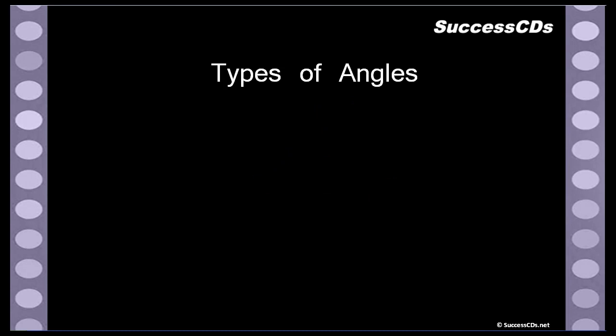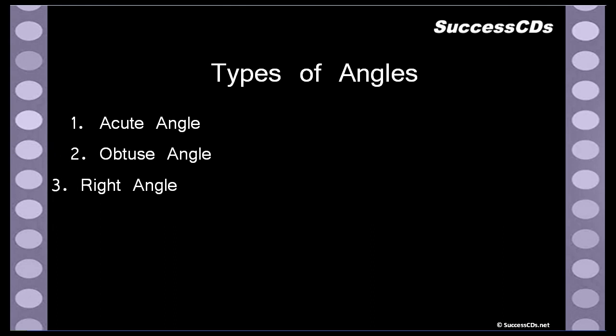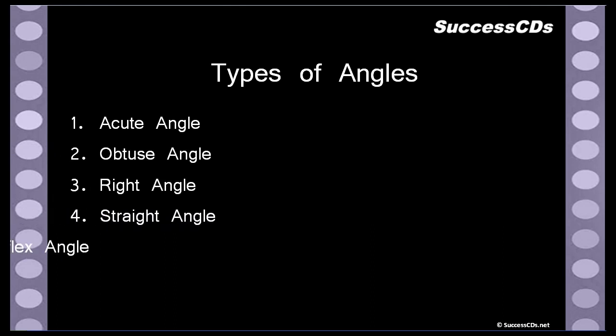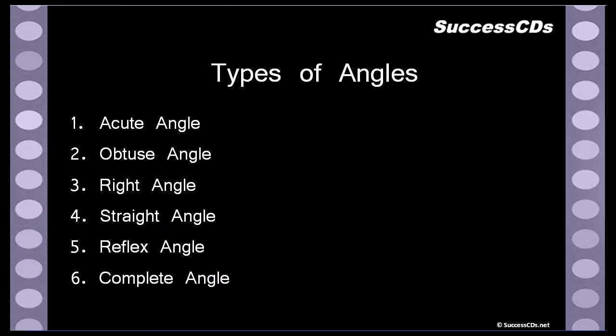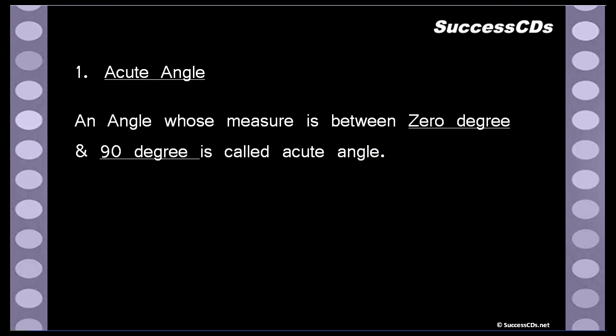Now we come to the types of angles. We have various varieties of angles: acute angles, obtuse angles, right angle, straight angle, reflex angles, complete angles. There are many types of angles. Let's discuss them one by one.